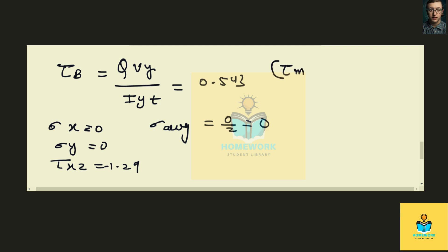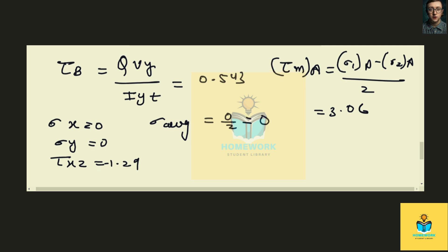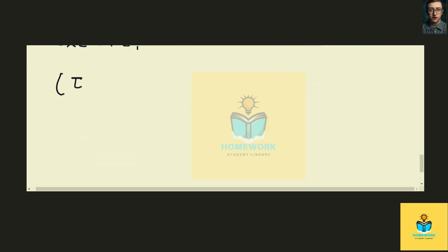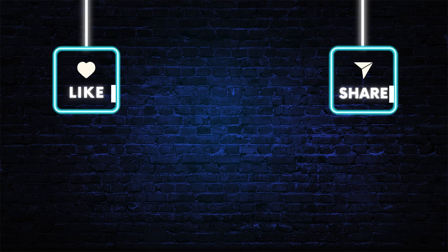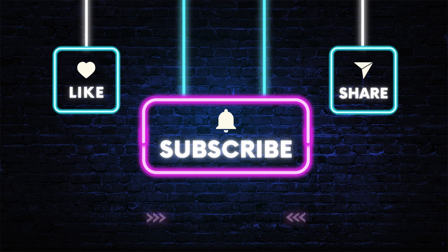Tau max a equals to sigma 1a minus sigma 2a divided by 2, that means 3.06 MPa. Now we have tau max b that equals to sigma 1b minus sigma 2b by 2, that means 1.29 MPa.